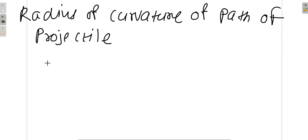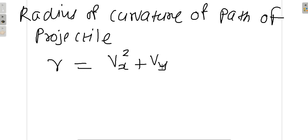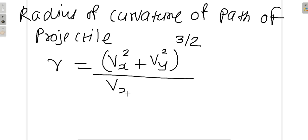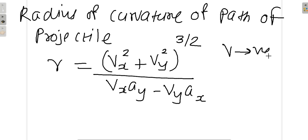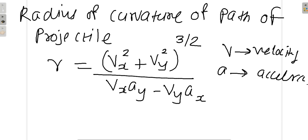So I am going to introduce the formula. The radius of curvature is given by (vx² + vy²) to the power 3/2, upon (vx·ay − vy·ax), where v stands for velocity and a stands for acceleration.